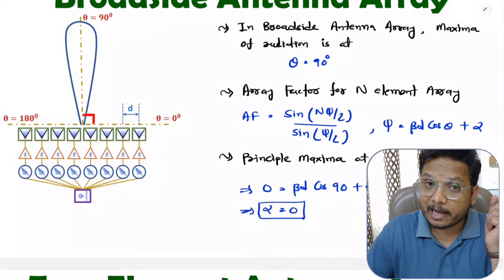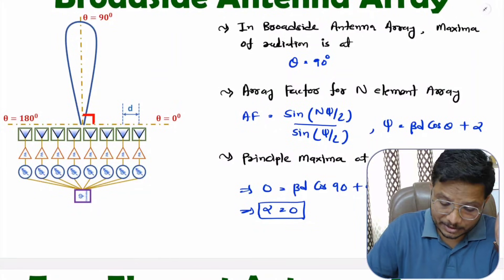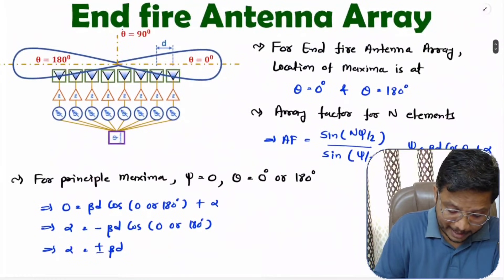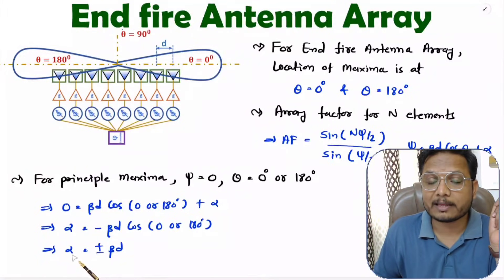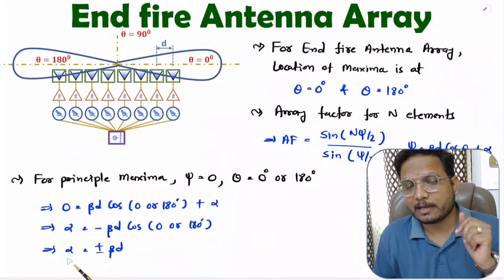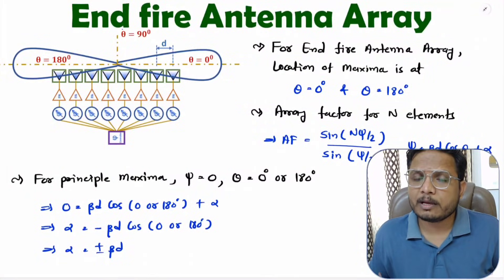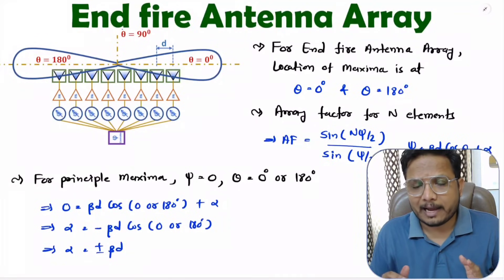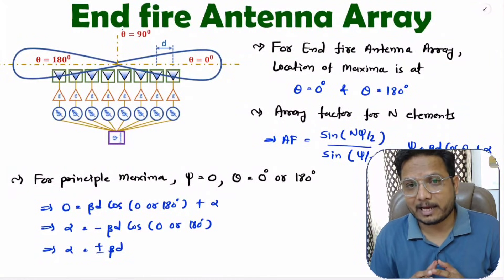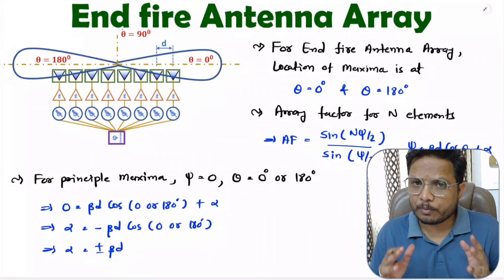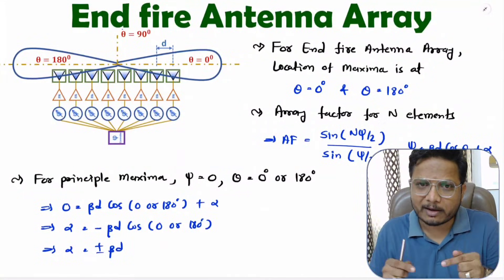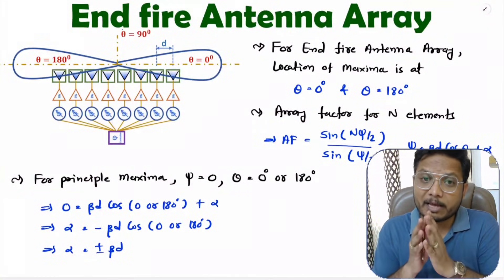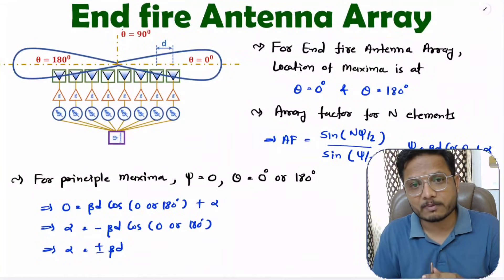In case of end-fire radiation pattern, the value of alpha should be plus or minus β·d, and for broadside radiation pattern, alpha should be zero. That is how one can have broadside and end-fire radiation patterns for N-element antenna arrays. I hope you understood this — if anything remains, note it down in the comment section; I'll be happy to help you. Thank you so much for watching this video.